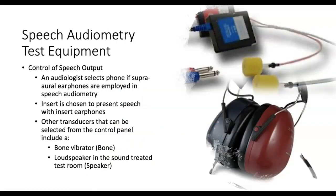Here are the transducers we can use: inserts, headphones, and you can actually use the bone conduction oscillator to present speech because it just vibrates the bones of the skull, just like in pure tone audiometry. For very young children who won't tolerate headphones — you can't put headphones on a seven-month-old — you would use the speaker. Remember, when you present through a speaker, you do not get ear-specific information, which is one of the downsides of sound field testing.